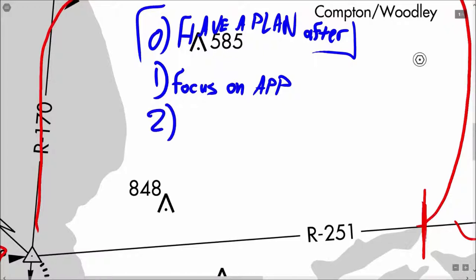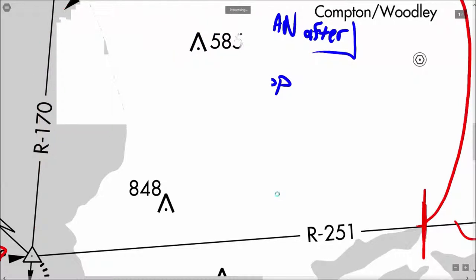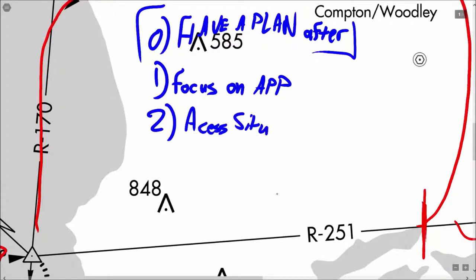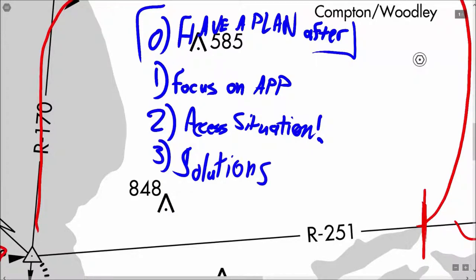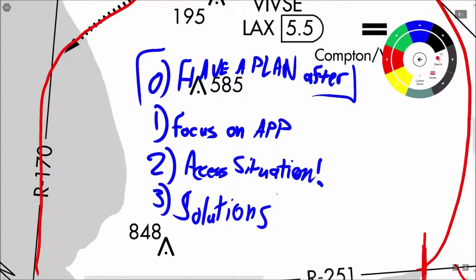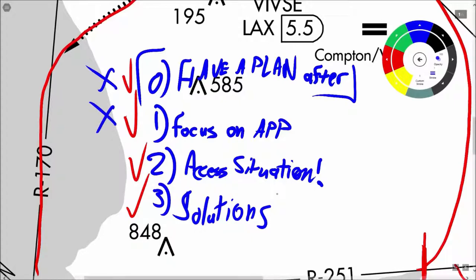Step two is assessing the situation after going missed. And step three is to think of solutions in the event that we went missed. On the first approach, if we get into checklist mode — this was done. I knew as soon as I go missed, I would hold at Limbo. I was able to focus on the approach, assess the situation and go missed, and figure out a solution once we had done the full missed approach procedure. On the second time, I didn't do this, which meant it was hard for me to focus. Assessing the situation and control inputs was kind of a meh, and there was no solution to the problem anyway — but I definitely should have focused on the approach.